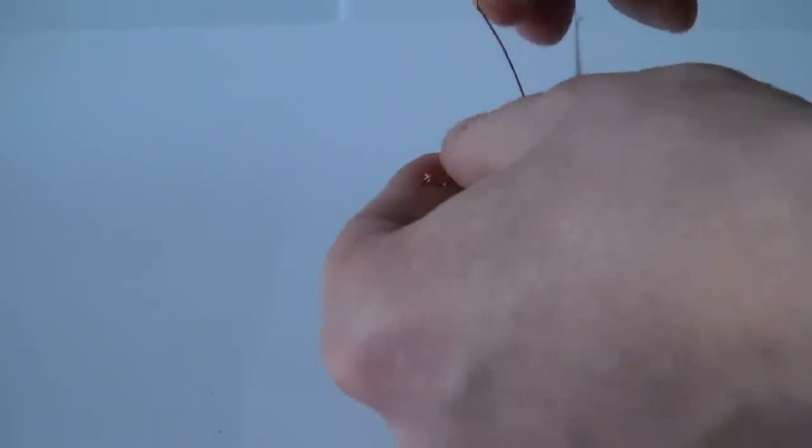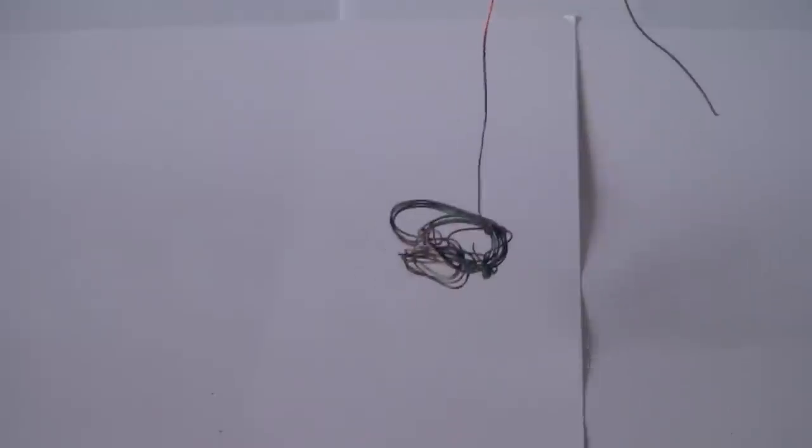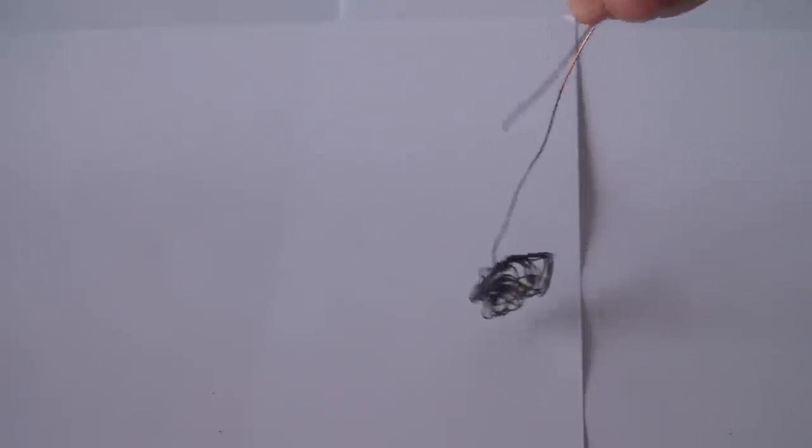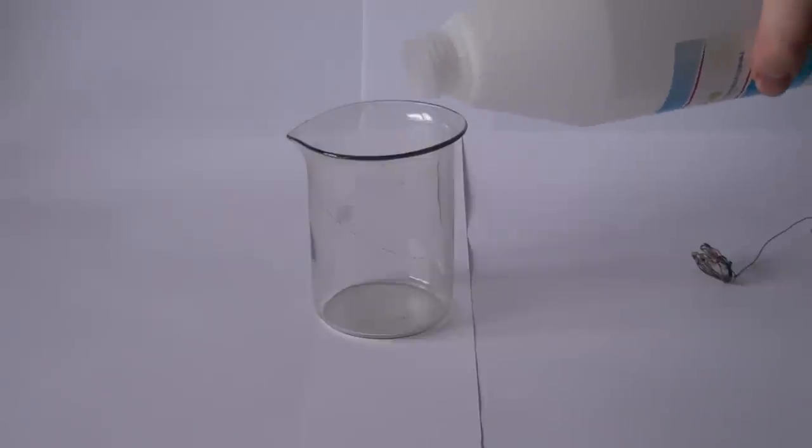Furthermore, the resulting coil of wire must be burned to get rid of the thin polymer layer. Once you have prepared the copper wire, pour a little bit of acetone into a beaker.